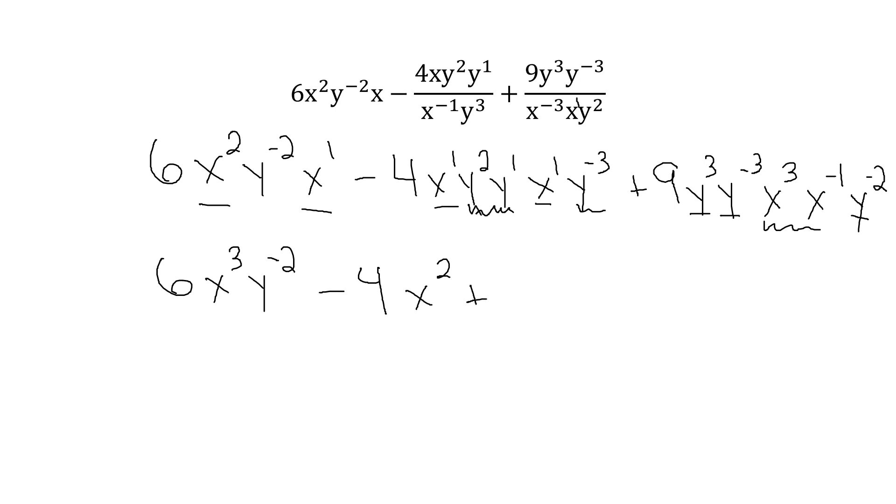Now, I have a y^3, a y^-3. That kind of cancels each other out. And then a y^-2. x^3, x^-1. So that gives me x squared. y^-2. Now, I feel like I've messed up somewhere, but hopefully not.